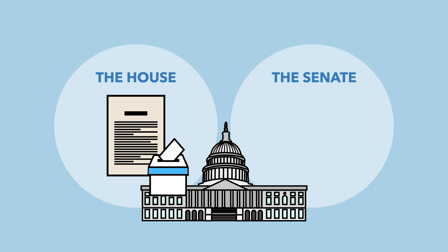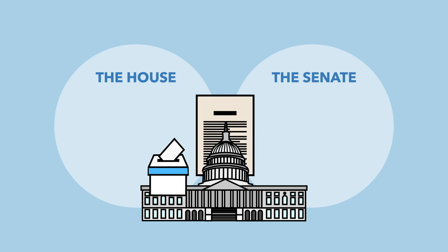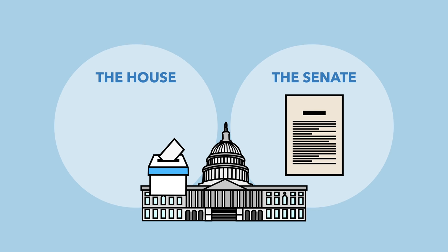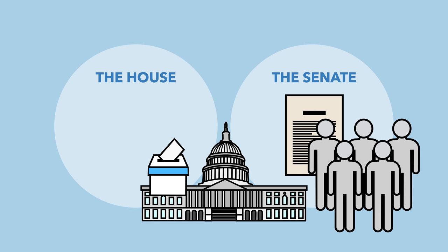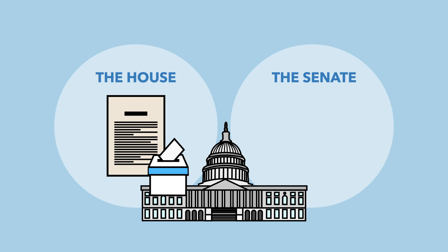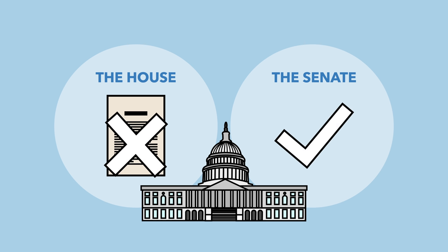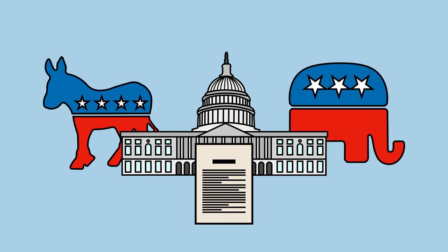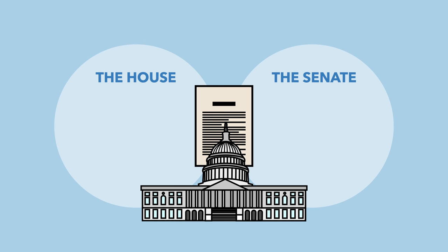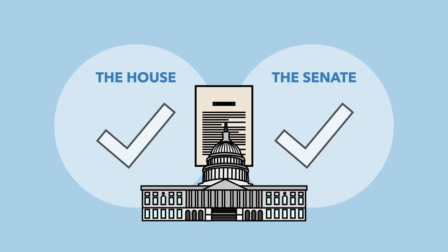If the bill clears the vote of the full House or Senate, it then proceeds to the other chamber of Congress for the same committee and vote process. If the second chamber changes the bill in any way, it then has to go back to the first house for another vote. If the two houses cannot come to an agreement, the bill is sent to the conference committee, made up of members of both political parties and both houses, until they come up with a version of the bill that satisfies both sides.